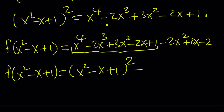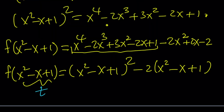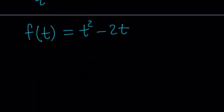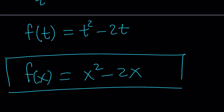Now when you replace x squared minus x plus 1 with t, it's a piece of cake. f of t equals t squared minus 2t. And if you want the expression for f of x, it's simply x squared minus 2x. This brings us to the end of this video. Thank you for watching — I hope you enjoyed it. Please comment, like, and subscribe. I'll see you next time. Until then, be safe, take care, and bye-bye.